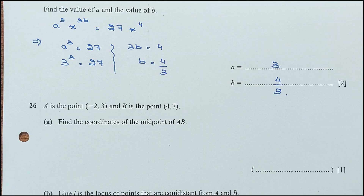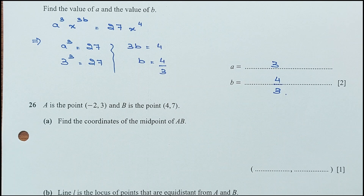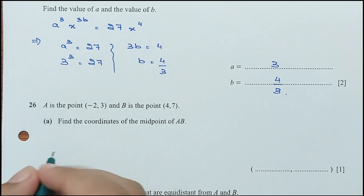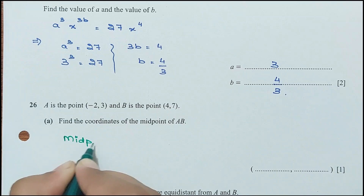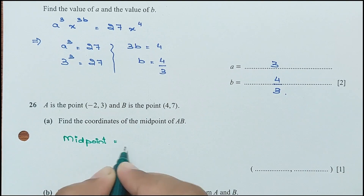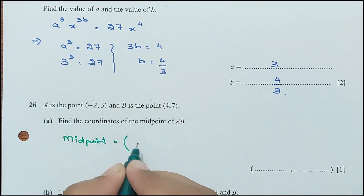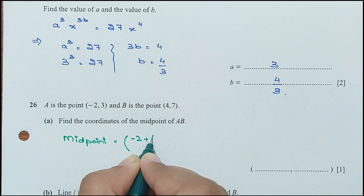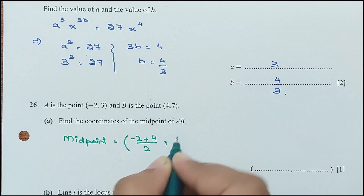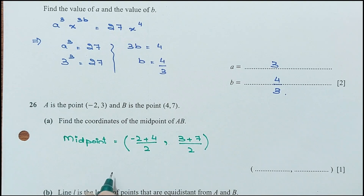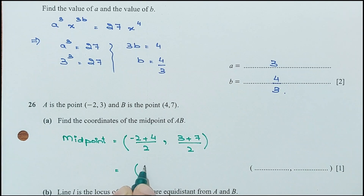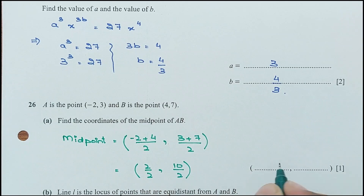Question 26 part A: A is the point (−2, 3) and B is the point (4, 7). Find the midpoint of AB. Midpoint = ((−2 + 4)/2, (3 + 7)/2) = (2/2, 10/2) = (1, 5).